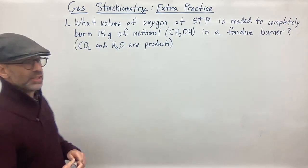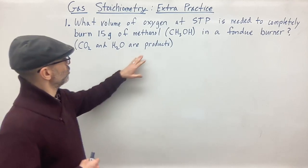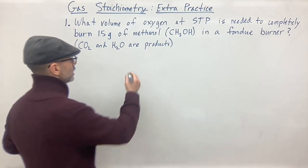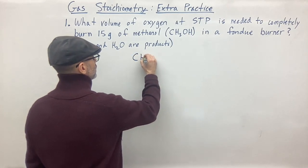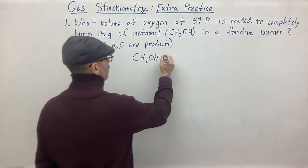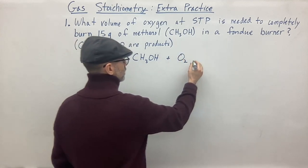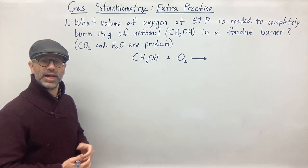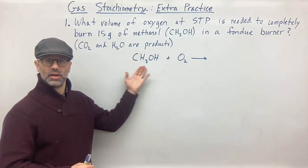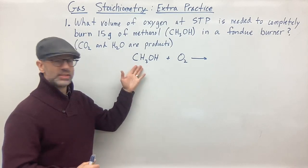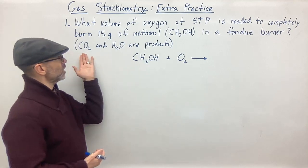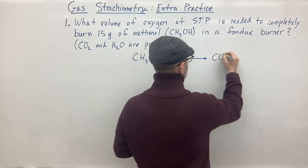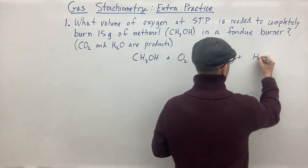The first thing you need is a balanced equation. You're told that you're reacting methanol with oxygen and forming these products. So you write out the skeletal equation: CH3OH reacts with oxygen, and carbon dioxide and water are the products. These are typically the products of a combustion reaction involving hydrocarbons — anything that has C, H, and O in it.